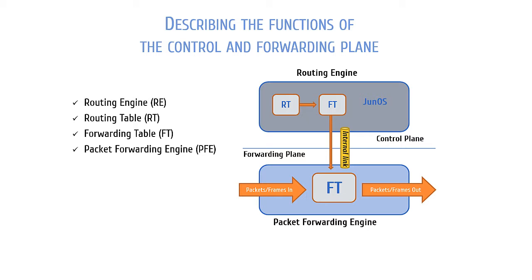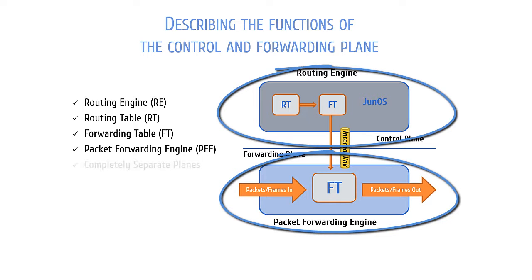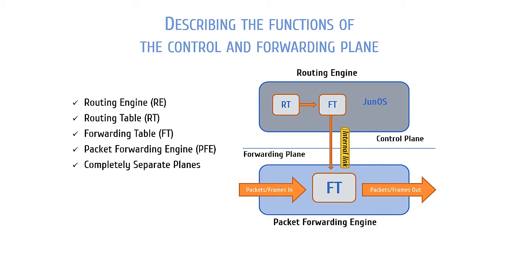With Junos devices, the control and forwarding planes are completely separate and independent of each other. This is so that devices can better handle unanticipated loads and can actually pass traffic faster as both planes are running concurrently. The PFE is responsible for implementing various services like stateless firewall filters, class of service, and rate limiting policers.